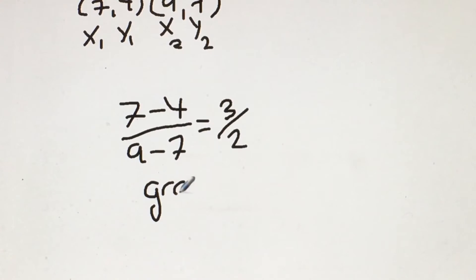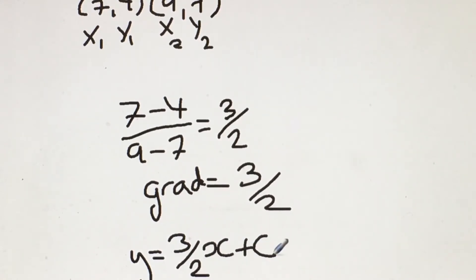So far we have y equals 3 over 2 x plus c. So how do we find the value of c? Well, to find the value of c we're going to substitute either point P or point Q into this equation.